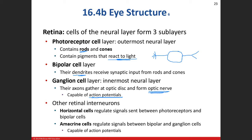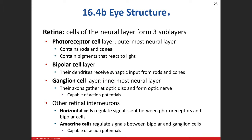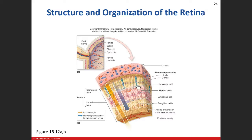Intermixed between cell layers are additional regulatory cells. Between the photoreceptor layer and the bipolar cell layer are horizontal cells, named for their horizontal configuration. Between the bipolar and ganglion cell layers are amacrine cells. Both have regulatory roles in visual signal processing. You can see all these different cells in the diagram — photoreceptors, bipolar cells, ganglion cells, horizontal cells, and amacrine cells.